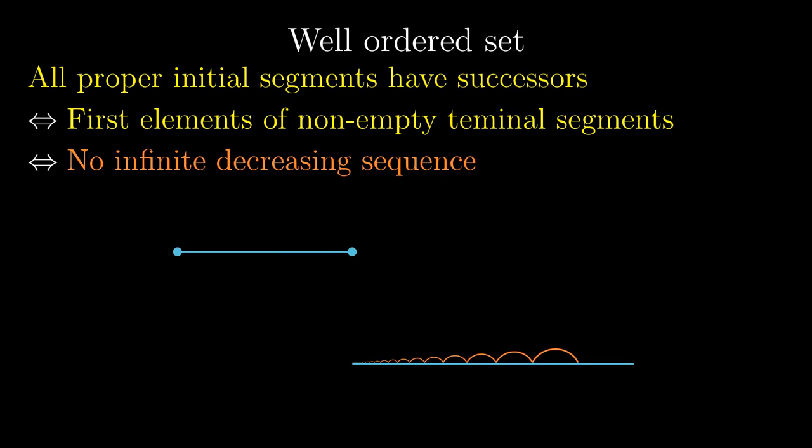it divides the set into a proper initial segment and a non-empty terminal segment without the first element covered by the sequence. There cannot be the first element in the terminal segment because the sequence goes backward and backward.